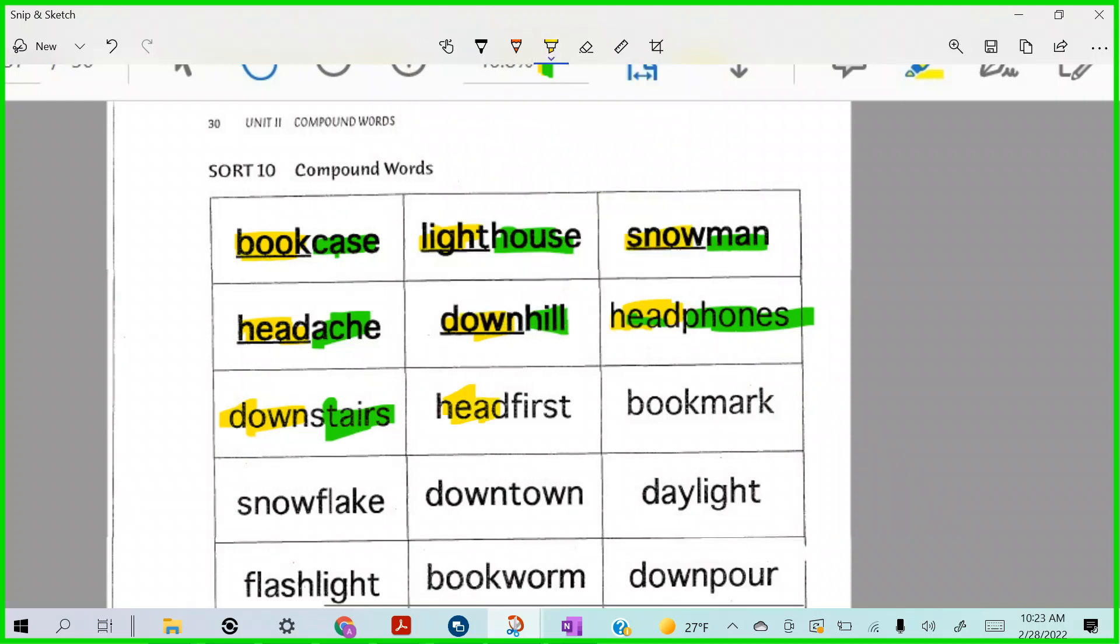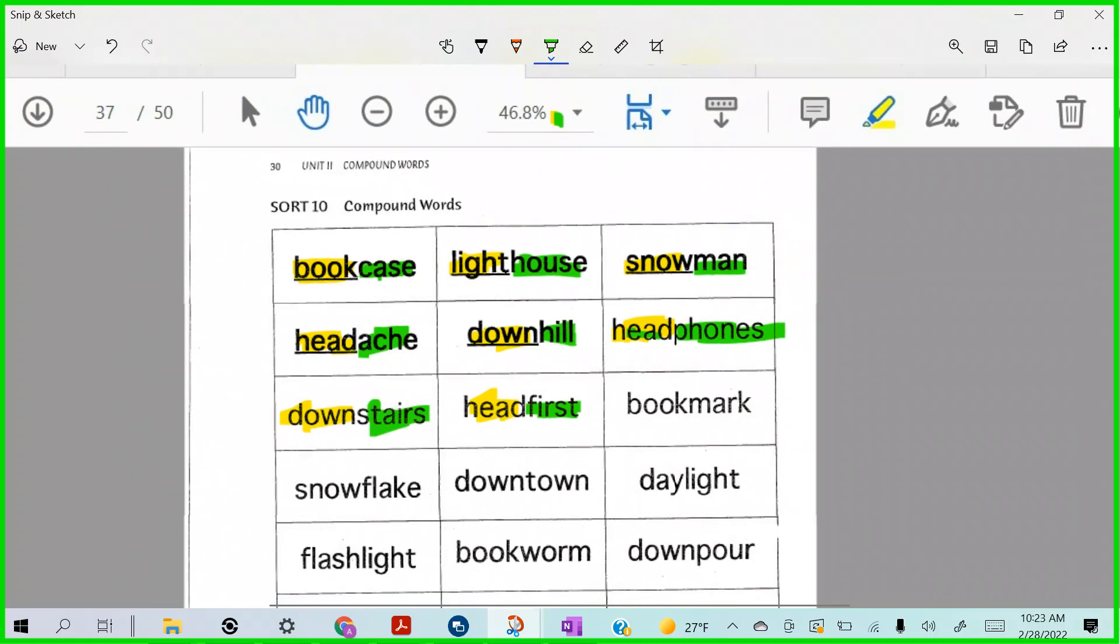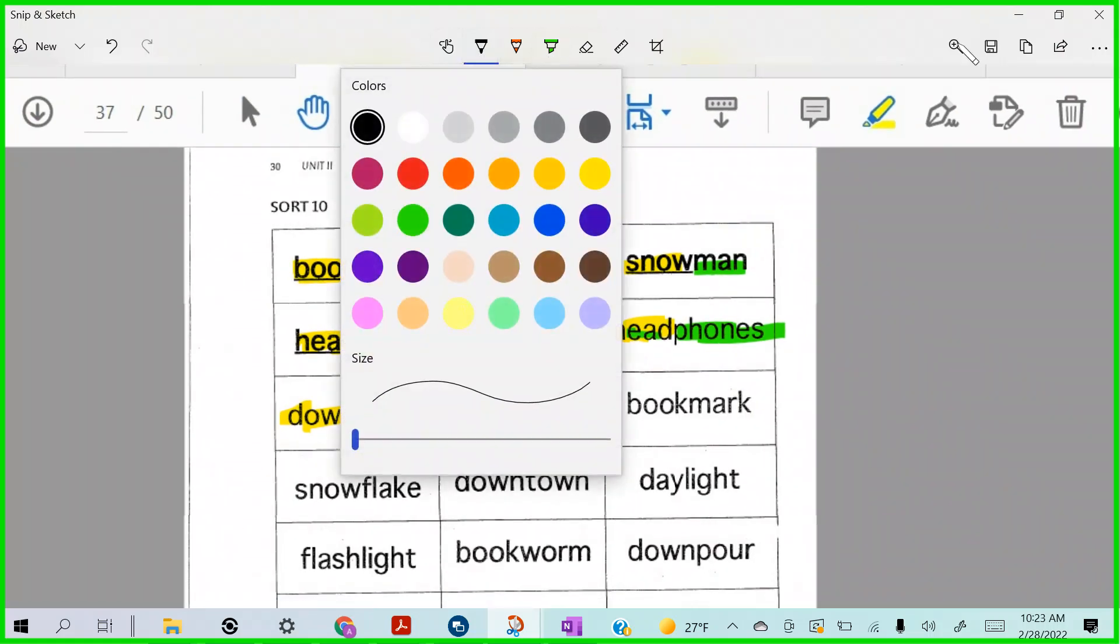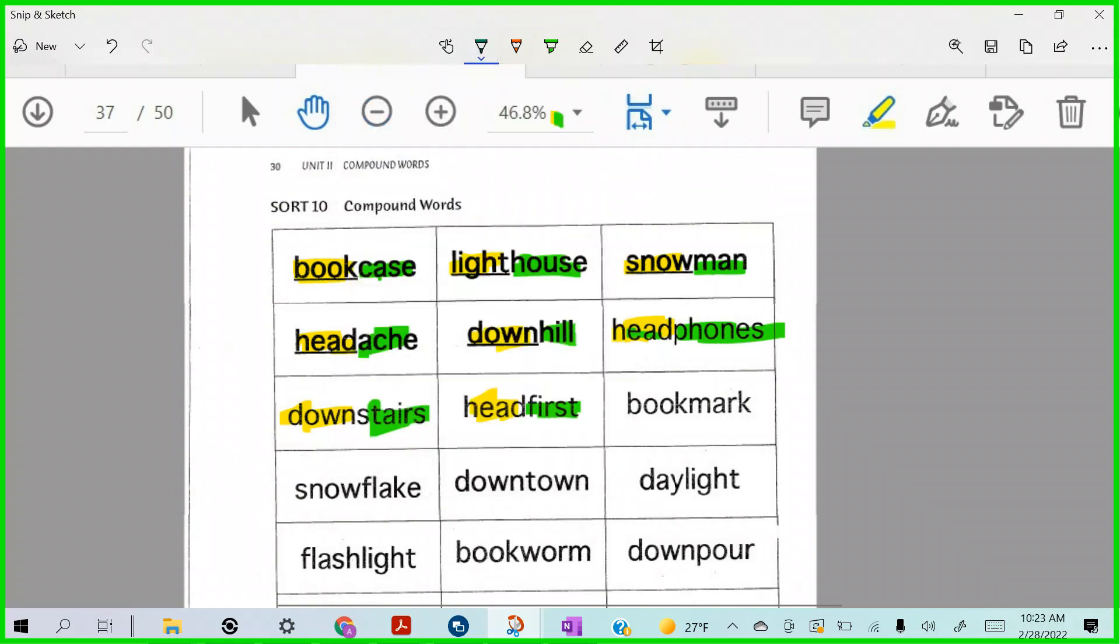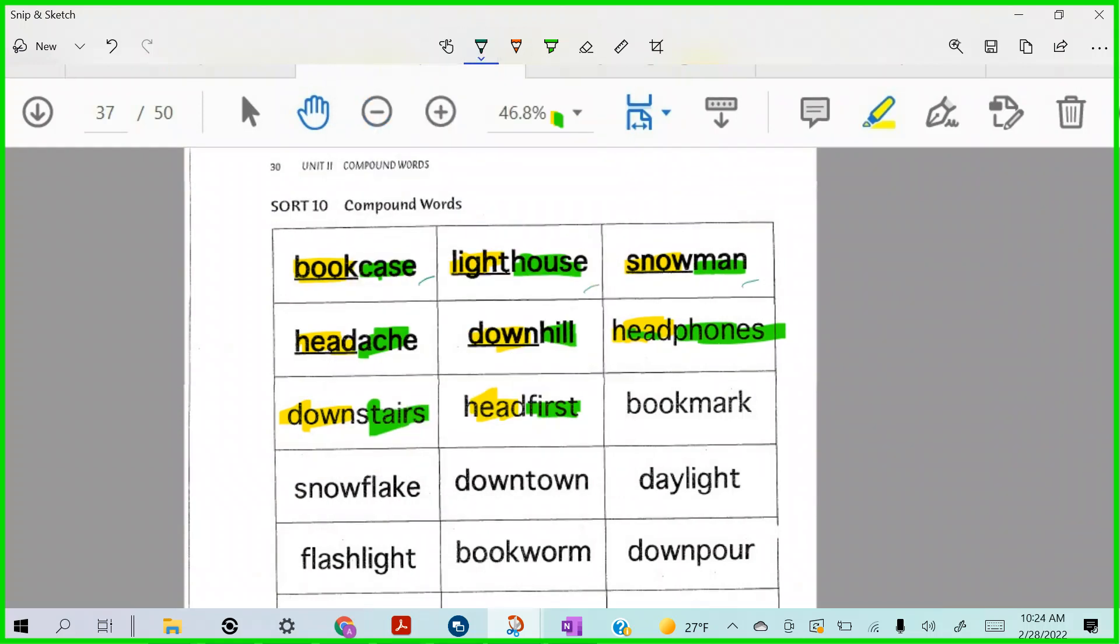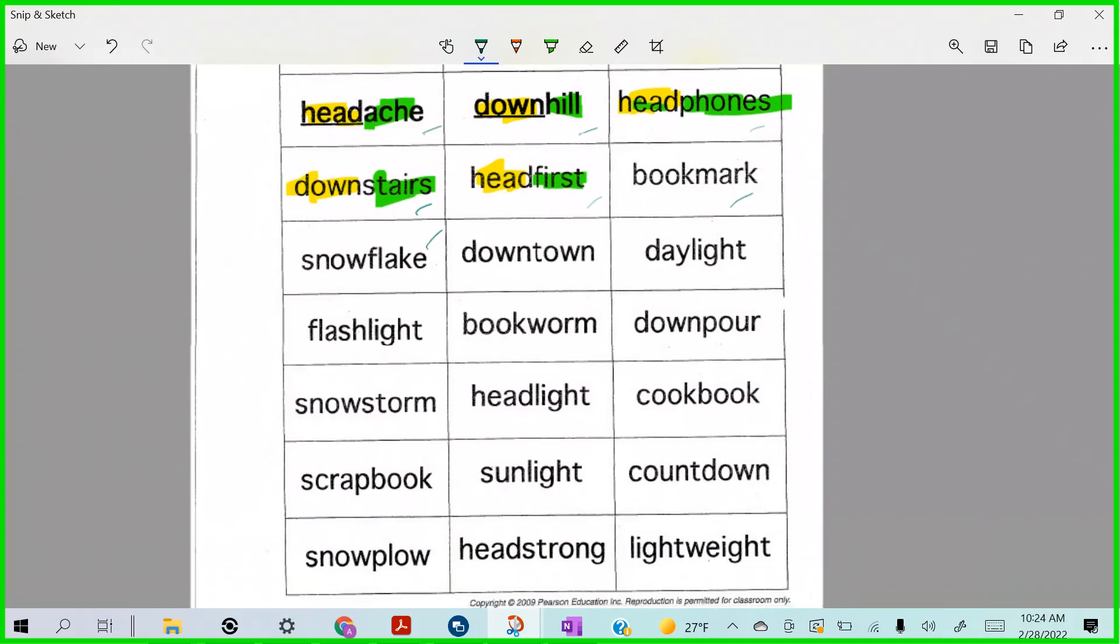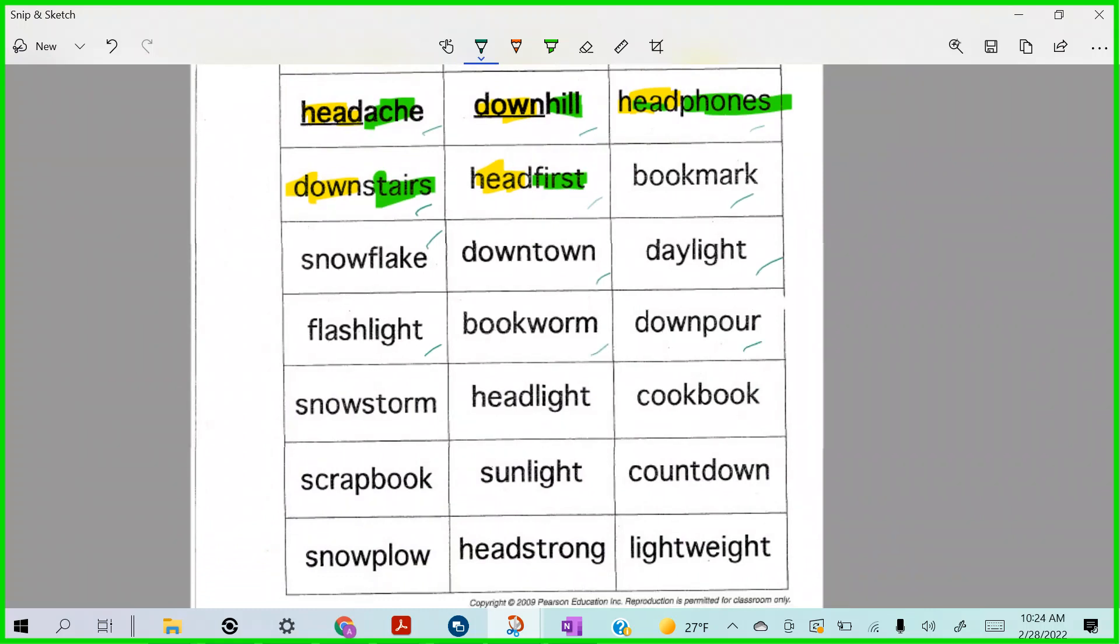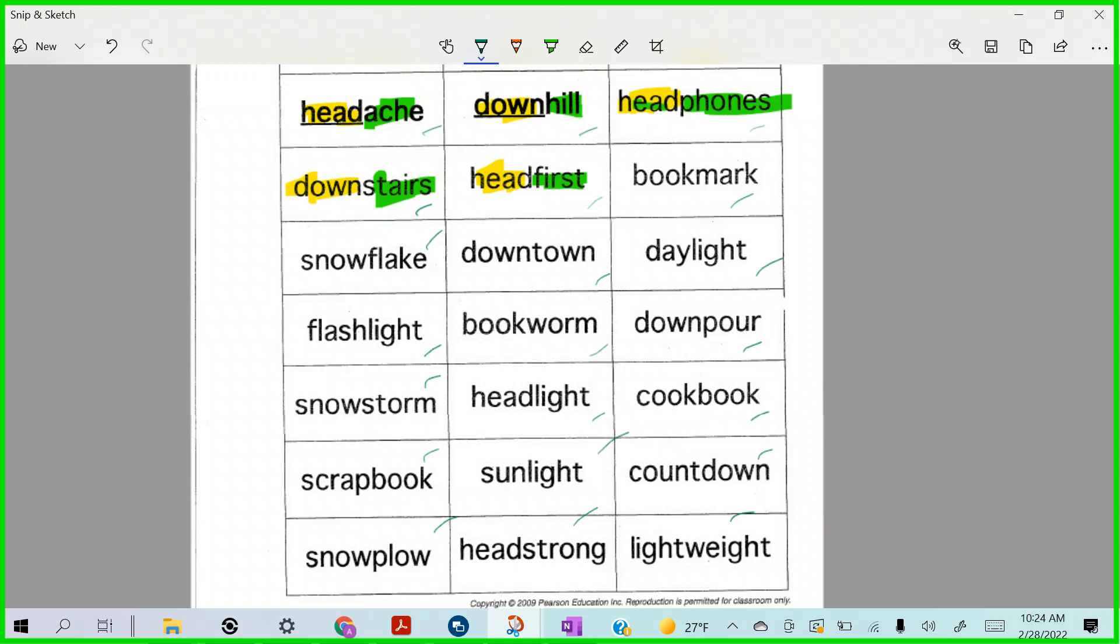And then first. Okay, so now here's what you're gonna do. I'm gonna go through the rest of your words with you. You ready? We have bookcase, lighthouse, snowman, headache, downhill, headphones, downstairs, headfirst, bookmark, snowflake, downtown, daylight, flashlight, bookworm, downpour, snowstorm, headlight, cookbook, scrapbook, sunlight, countdown, snowplow, headstrong, and lightweight.